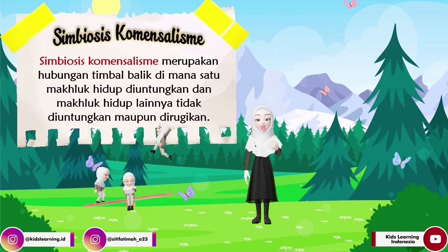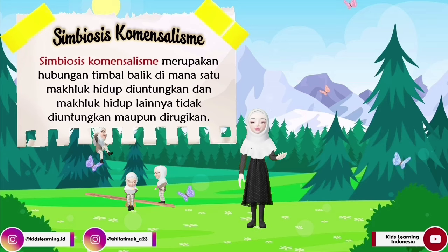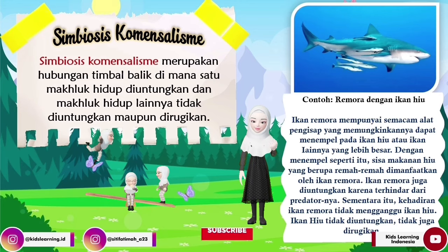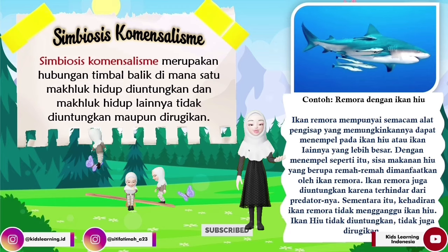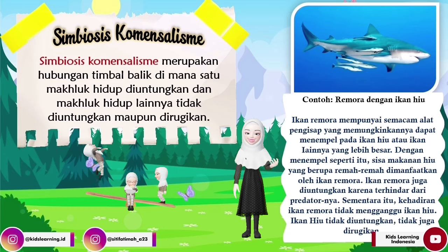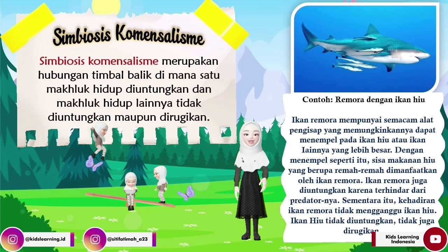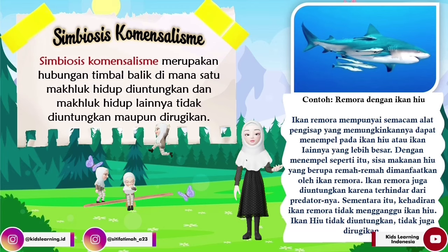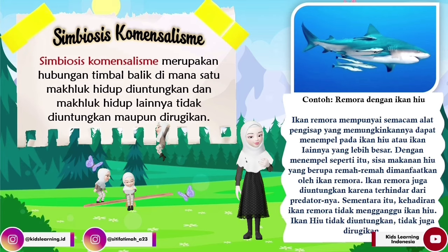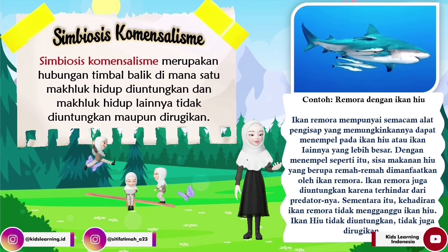Oke teman-teman, kita lanjut ke contoh simbiosis komensalisme yang kedua, yaitu ada ikan remora dan ikan hiu. Ikan remora ini mempunyai semacam alat pengisap yang memungkinkannya dapat menempel pada ikan hiu atau ikan lainnya yang lebih besar. Dengan menempel seperti itu, sisa makanan hiu yang berupa remah-remah dimanfaatkan oleh ikan remora. Ikan remora juga diuntungkan karena terhindar dari predatornya, sementara kehadiran ikan remora tidak mengganggu ikan hiu — ikan hiu tidak diuntungkan dan juga tidak dirugikan.